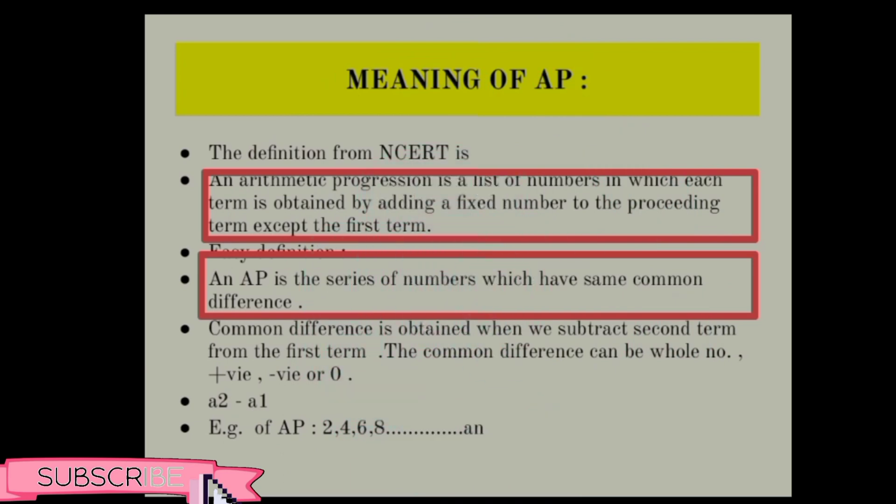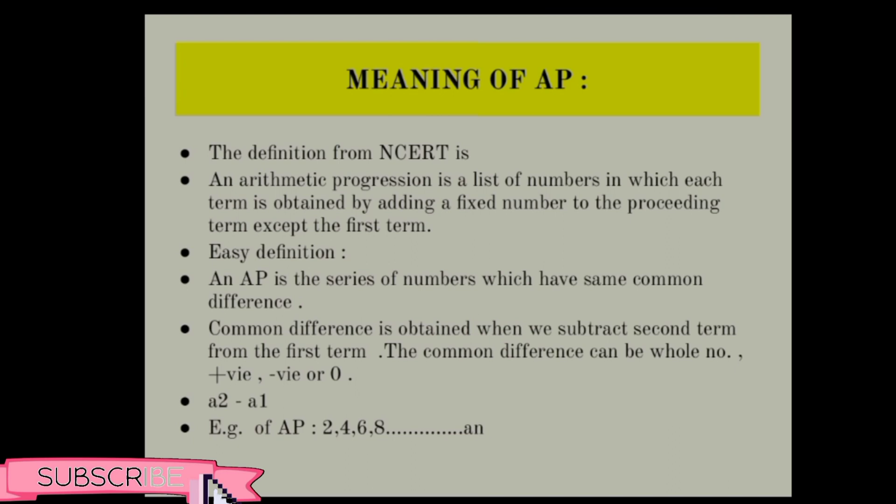First, the meaning of AP. The definition from NCERT is: an arithmetic progression is a list of numbers in which each term is obtained by adding a fixed number to the preceding term except the first term. My easy definition: an AP is a series of numbers which have the same common difference.